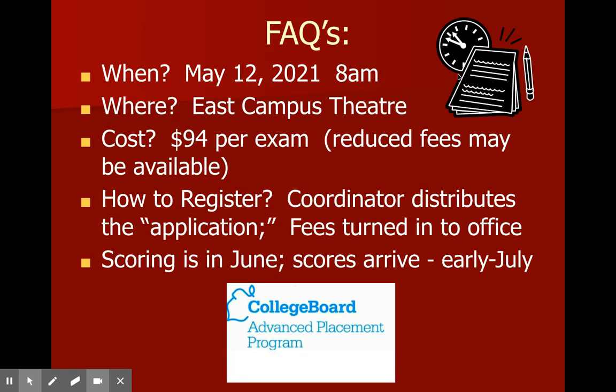Frequently asked questions: this year the AP exam is scheduled for May 12th, 2021. Last year in 2020, because of the coronavirus, it was held online. The AP College Board has no plans to hold this one online, though changes could be made depending on what happens with the coronavirus. The exam is scheduled at East Campus Theater on May 12th from 8 a.m. to noon. It's $94 per exam, with reduced fees available for free and reduced lunch. The AP coordinator will distribute applications to register usually in early October. Scoring happens in June and scores arrive in early July.